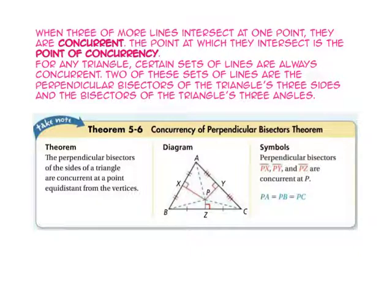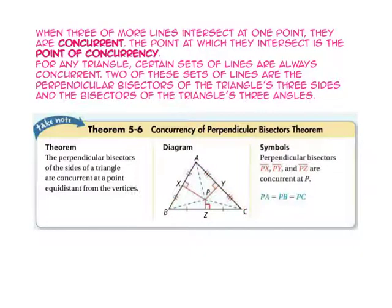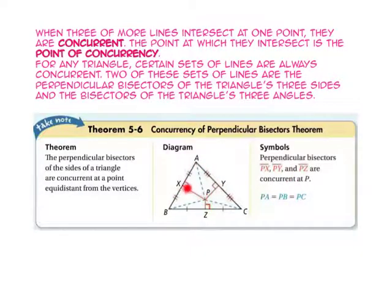Let's take a look at the concurrency of perpendicular bisectors theorem. The perpendicular bisectors of the sides of a triangle are concurrent at a point equidistant from the vertices. If you take a look, segments XP, YP, and ZP are the perpendicular bisectors of the three sides of the triangle. Notice segment PX is perpendicular to segment AB, meaning they form a right angle, and it bisects segment AB into two congruent segments, XB and XA. Since all three of these segments are perpendicular bisectors, they are equidistant from each vertex.